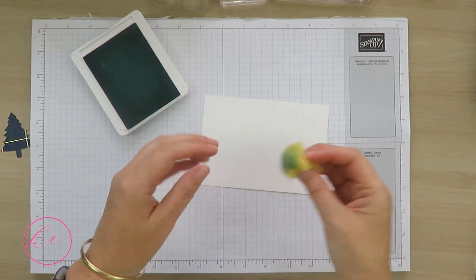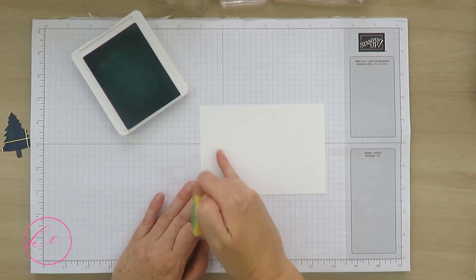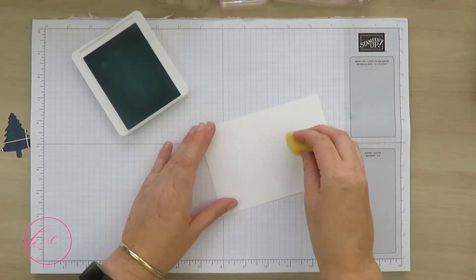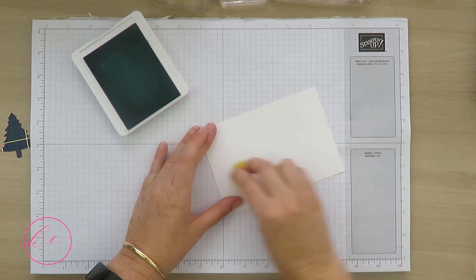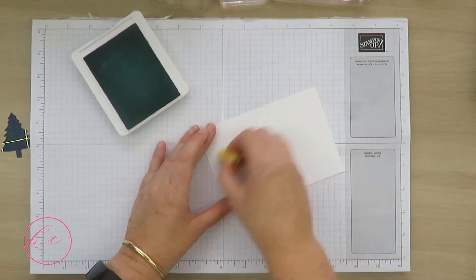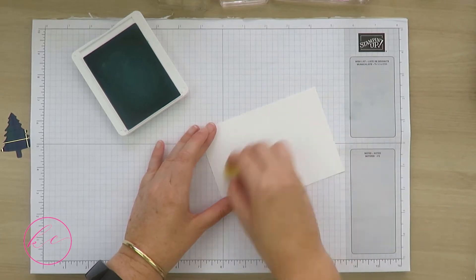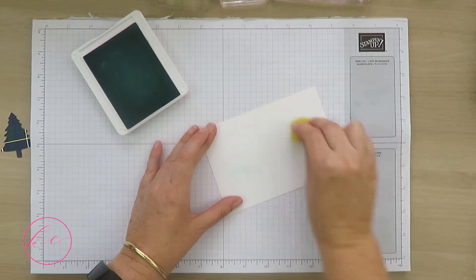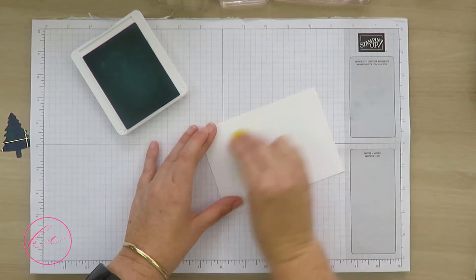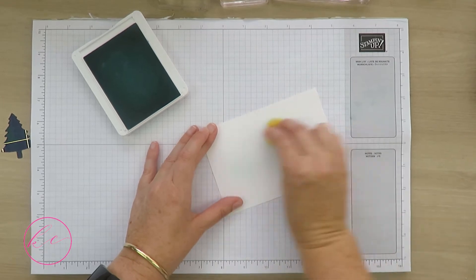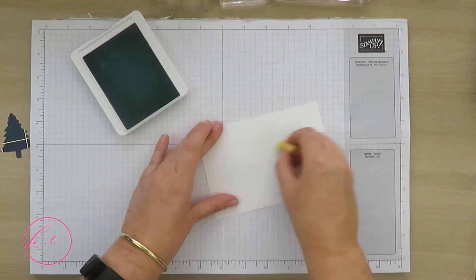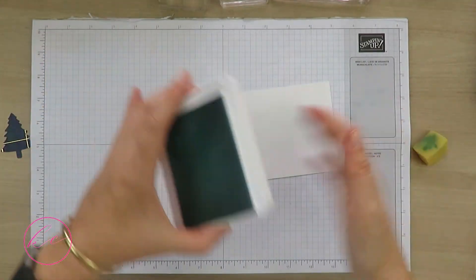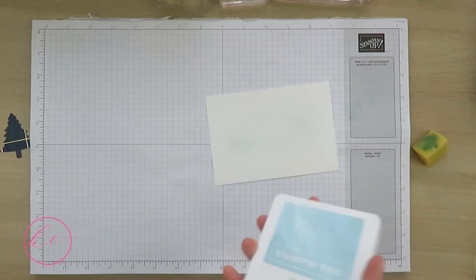Pool Party ink and a stamp and sponge is create a little sponged area right in the middle. The reason is I'm going to put an element in front of it and I just want a bit of a blue highlight behind it. So in a circular motion, very lightly, I'm adding that color. It's quite faint but that's the look I was after.